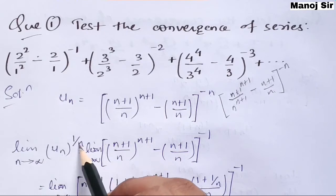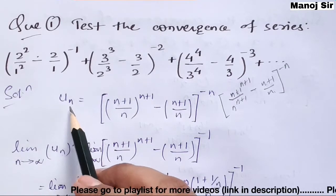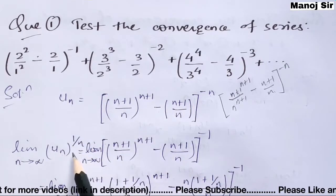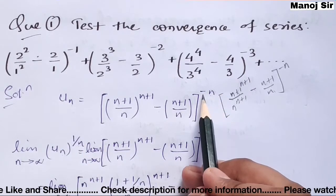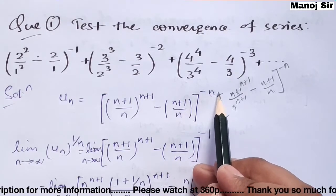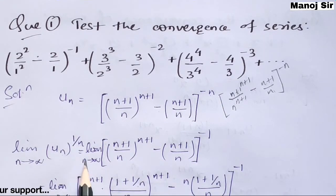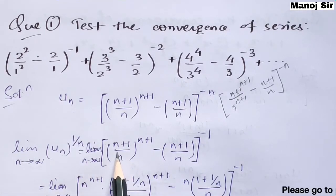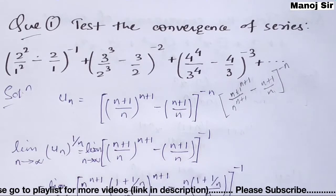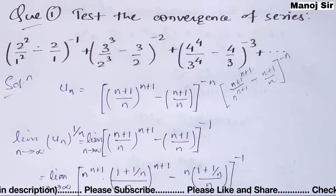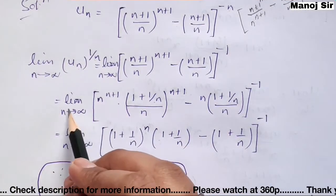Now we need to find the limit n tends to infinity of u_n^(1/n). If we multiply the exponents by 1/n, the term (n+1)·(1/n) remains as (n+1)/n in the first part, and −n·(1/n) = −1 in the second part. So limit n tends to infinity of u_n^(1/n) equals limit n tends to infinity of [(n+1)/n]^(n+1/n) · [(n+1)/n]^(−1).